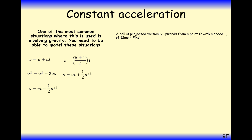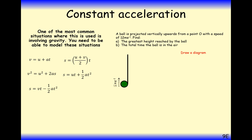A ball is projected vertically upwards from a point O with a speed of 12 metres per second. We want to find the greatest height and the total time the ball is in the air. The particle is going to go upwards until it reaches a maximum height, where it runs out of velocity and starts to fall back downwards. At maximum height, velocity is always equal to zero.